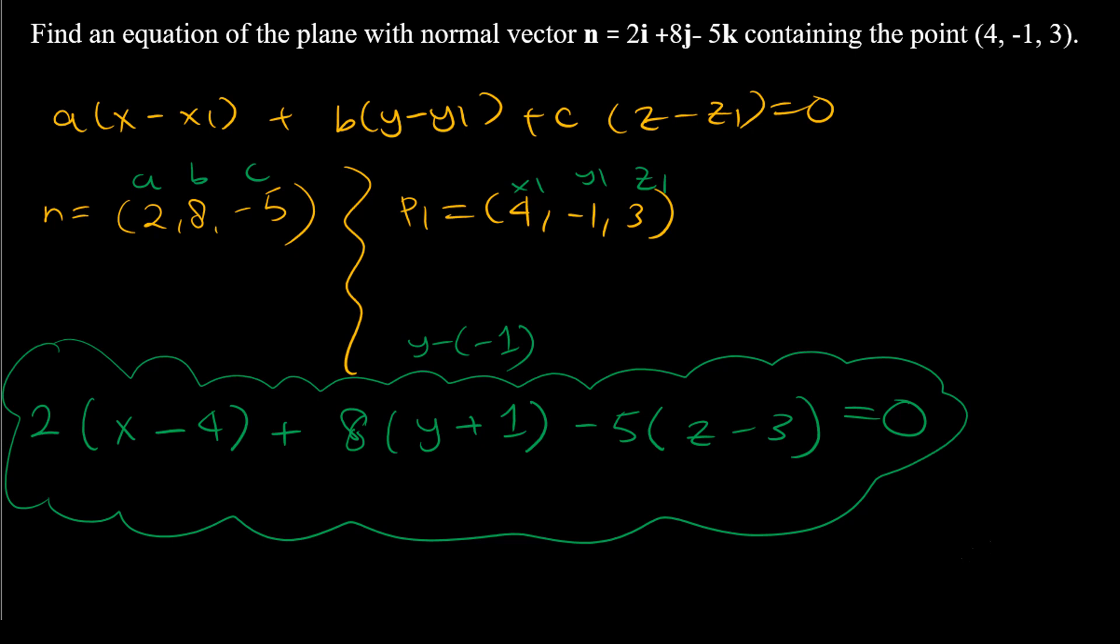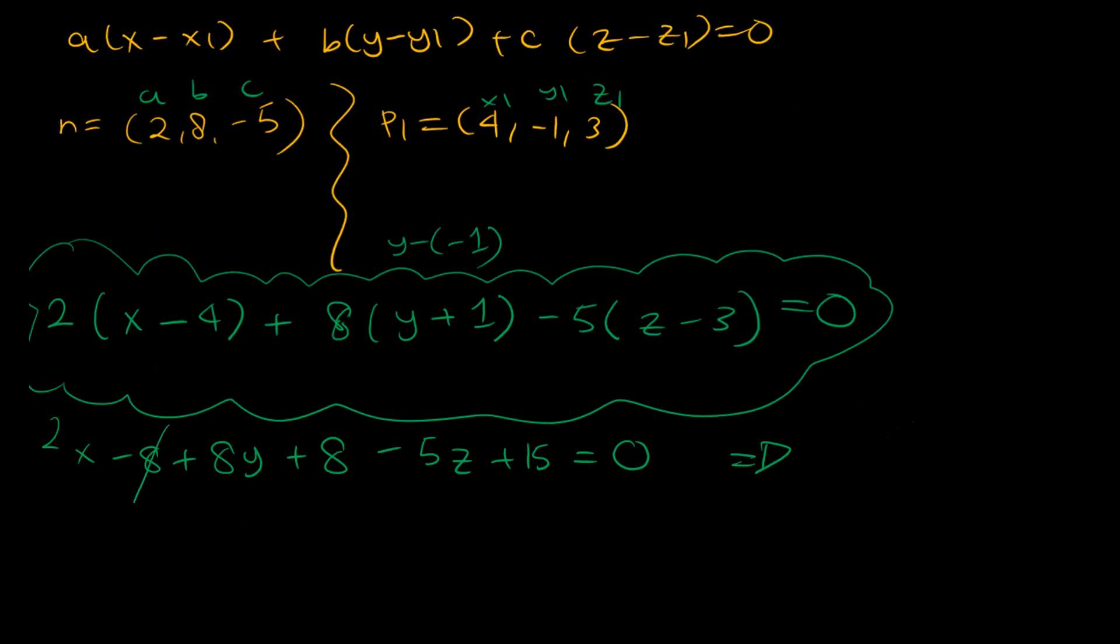Here you can leave it like this as well, but if you want you can simplify it. Simplifying gives 2x minus 8 plus 8y plus 8, then negative 5z plus 15 equals 0. And then negative 8 and 8 cancel out. So we have 2x plus 8y minus 5z plus 15 equals 0. So the simplified answer can also be written as this.